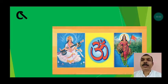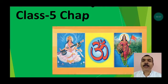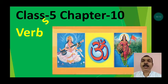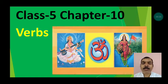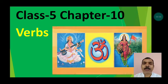Welcome, my dear students. Today we will read a new chapter — chapter number 10 of class 5. It is the chapter related to verbs. As you know, an action word is called a verb. Verbs are of two kinds: main verb, which is also called principal verb, and helping verb, which is also called auxiliary verb.